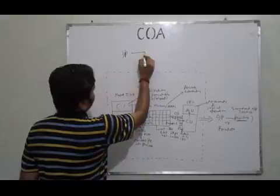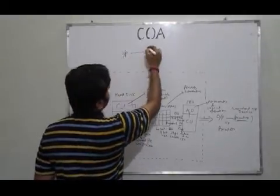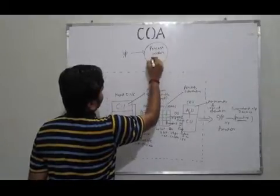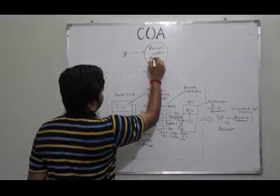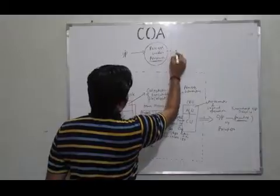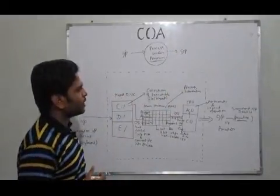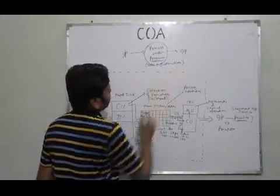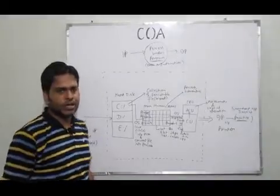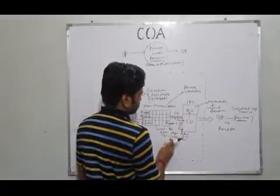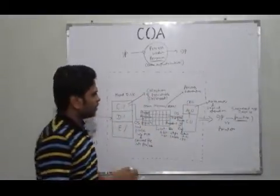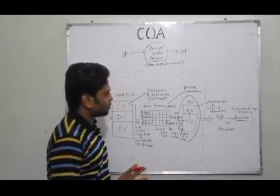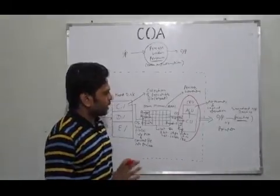that we take input from user through some standard device, and the computer process that input under the control of some program to give some output that is displayed on standard output device. So, this program basically consists of data and instruction. So, what is the idea of studying the computer organization architecture that we have to focus on this part of the computer, that is CPU.